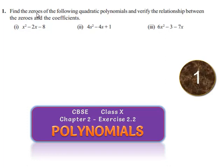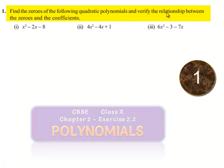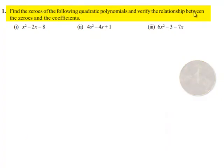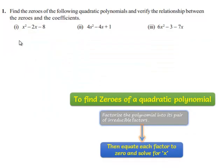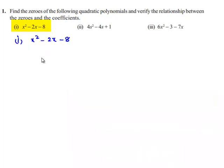Coming to the first problem: find the zeros of the following quadratic polynomials and verify the relationship between the zeros and the coefficients. The first polynomial given to us is x squared minus 2x minus 8.